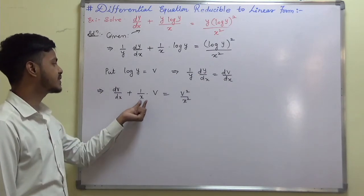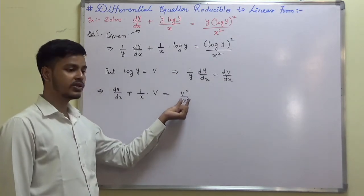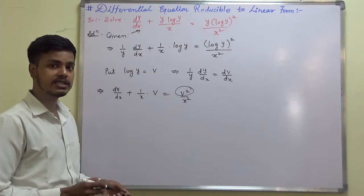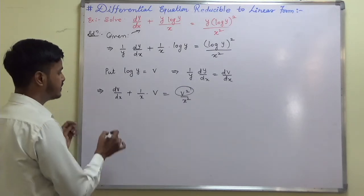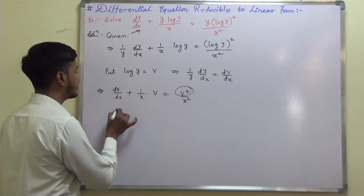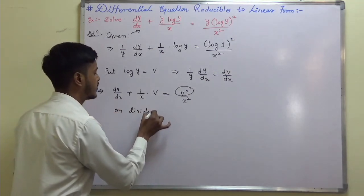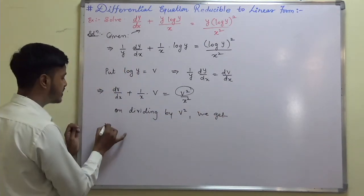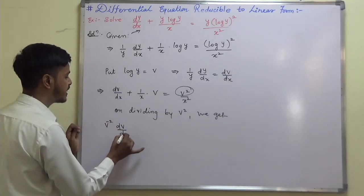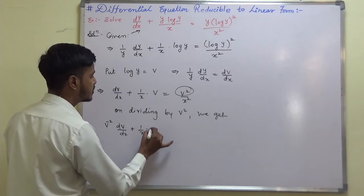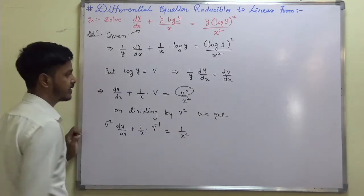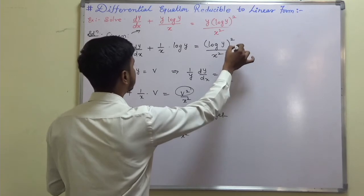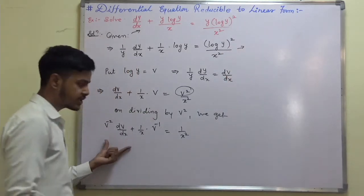The term v² is making trouble for the linear form dy/dx plus p(x)·y equals q(x). So divide throughout by v², giving v⁻²·dv/dx plus (1/x)·v⁻¹ equals 1/x². This is the first form of Bernoulli's equation, while what we had before was the second form. Now we need to make another substitution.